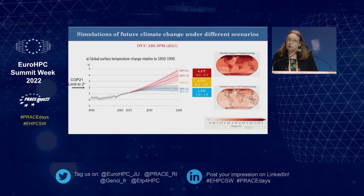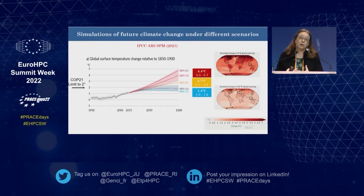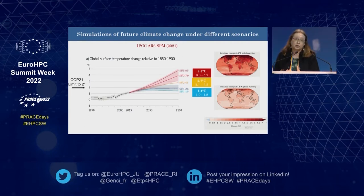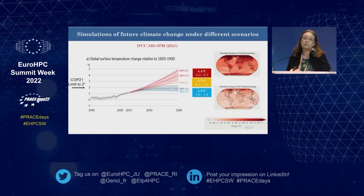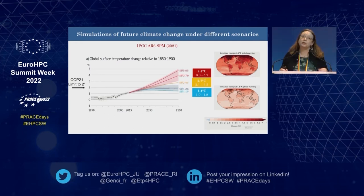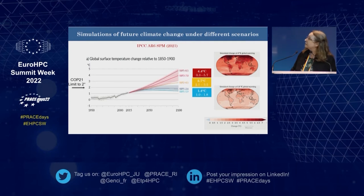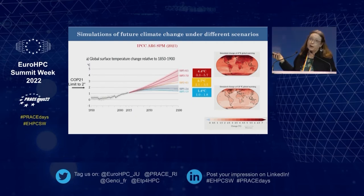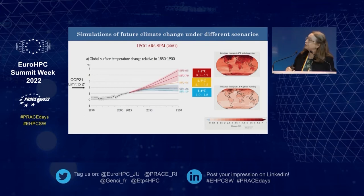The models are the only tools we have for the future. Using these models, we can force them with different scenarios of greenhouse gas emissions, aerosols, and land use change, and produce those curves presented in the last IPCC Intergovernmental Panel on Climate Change report issued last summer — AR6, the sixth assessment report. These curves show both the historical part and the answer of the models for different future scenarios.